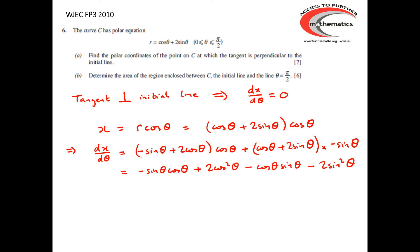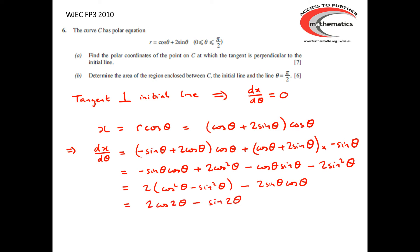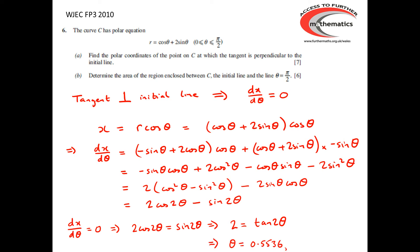Expanding that out, we get −sin θ cos θ + 2cos²θ − cos θ sin θ − 2sin²θ, which simplifies to 2(cos²θ − sin²θ) − 2 sin θ cos θ. Using cos²θ − sin²θ = cos 2θ and 2 sin θ cos θ = sin 2θ, we get dx/dθ = 2 cos 2θ − sin 2θ = 0, so 2 cos 2θ = sin 2θ, meaning tan 2θ = 2, giving 2θ = tan⁻¹(2).